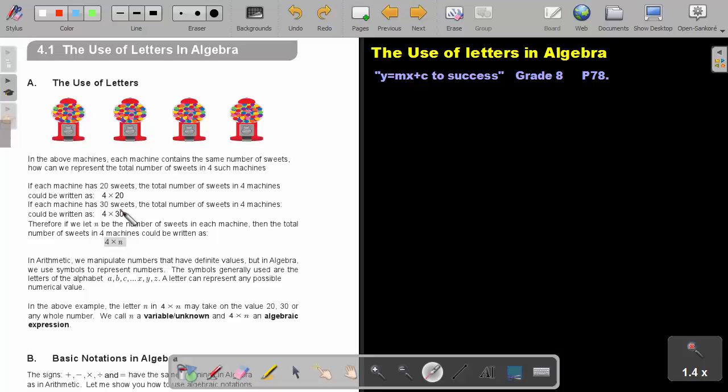If each machine has 30 sweets, the total number of sweets in 4 machines could be written as 4 multiply 30.